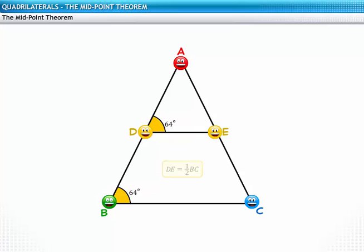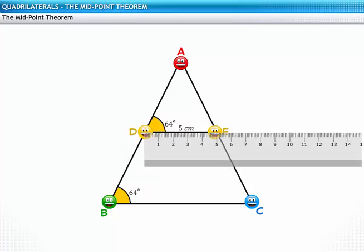Also, D and E claim that the distance between them is half the distance between B and C. For this, let's measure the length of the line segment DE and BC.